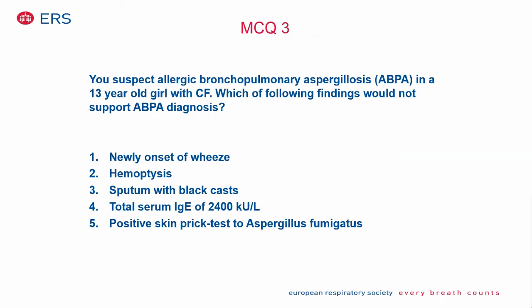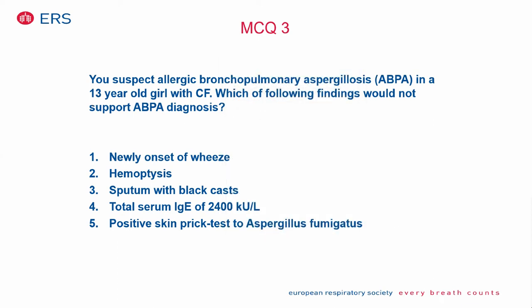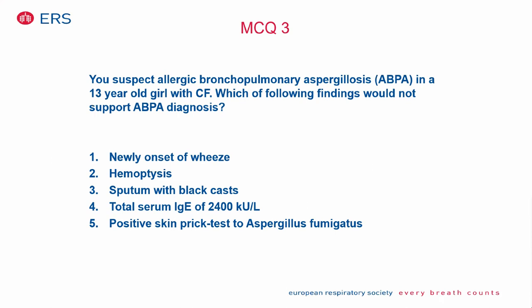MCQ 3: Suspecting ABPA in a 13-year-old girl, which finding would NOT support the diagnosis? The answer is hemoptysis. Hemoptysis is not a classical symptom of ABPA — it is usually caused by erosion of superficial bronchial vessels in advanced lung infection and is not a sign of ABPA. Wheeze, dark sputum casts, total serum IgE of 2400 kIU/L, and a positive skin prick test to Aspergillus fumigatus would all support the diagnosis.